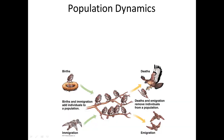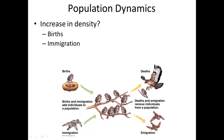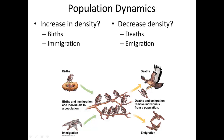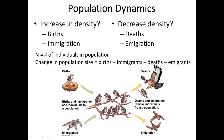At the very basics of population dynamics, the factors that cause it to increase in density are more births or immigration — whales coming from another population. Factors that decrease density include deaths and individuals leaving the population. We use N to represent the number of individuals in a population, and the change in population size equals births plus immigrants, minus deaths minus emigrants.